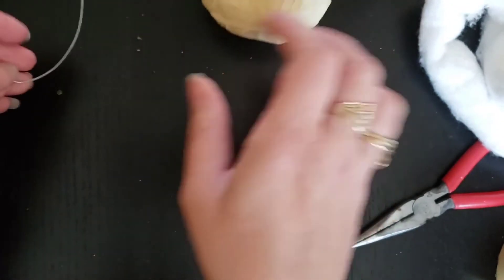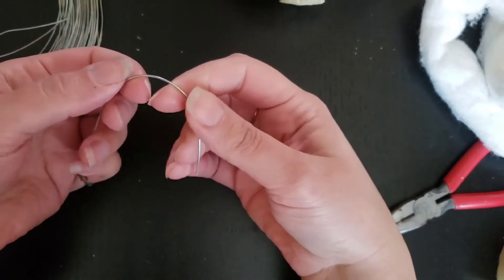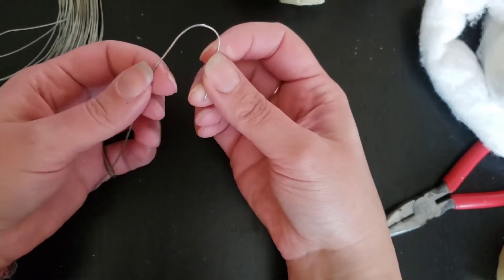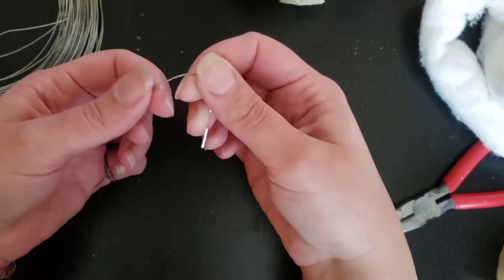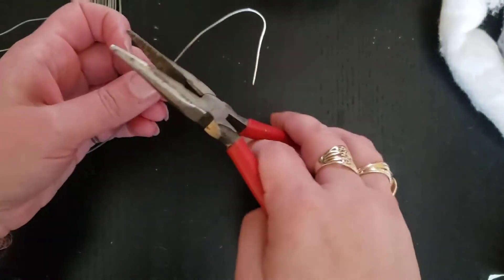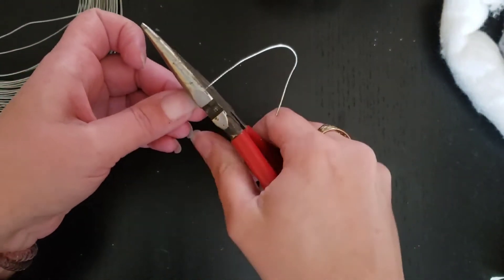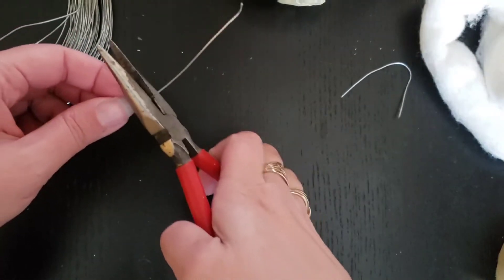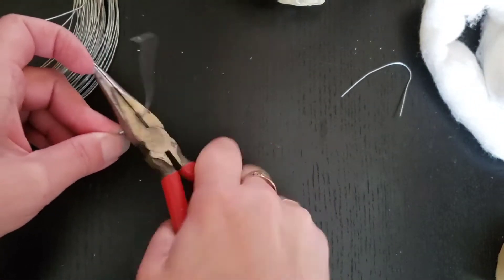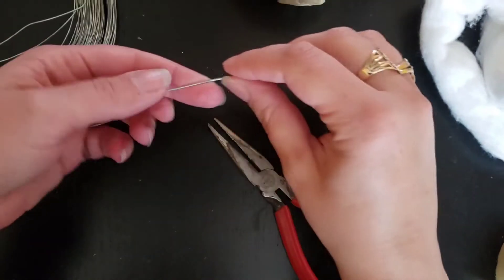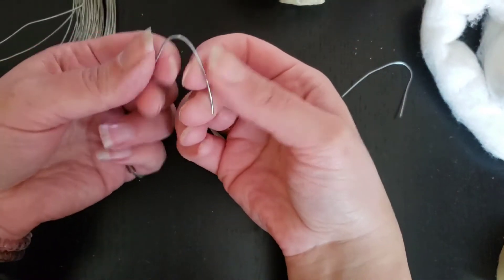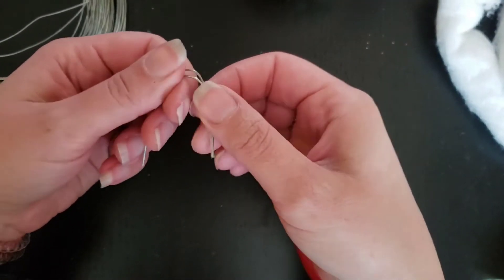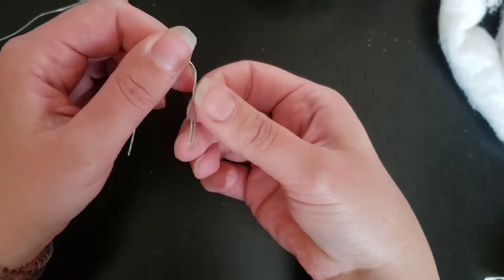Now I'm going to make some little ears as well out of wire. You just take your wire and make it into an ear shape. Just cut it off with your snips. I'm going to do this twice. Try to make them the same, approximately, otherwise your ears will be different sizes.